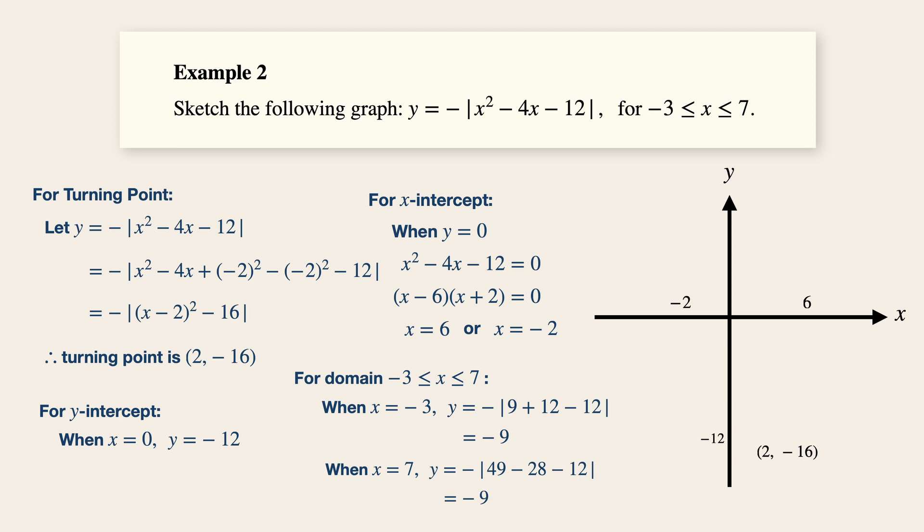Very quickly, we can sketch out a u-shape over here. And subsequently, we can also include minus 3 minus 9 and 7 minus 9. Now, this is an inclusive sign over here. So what we can do is to include two circle dots at the extreme ends of the graph. And don't forget to label this particular graph.